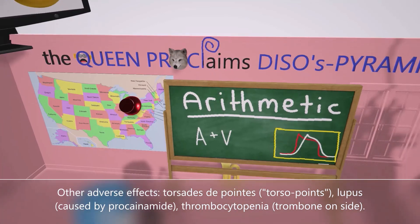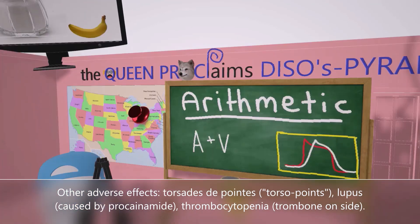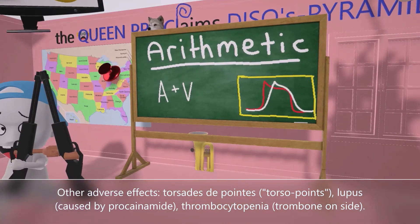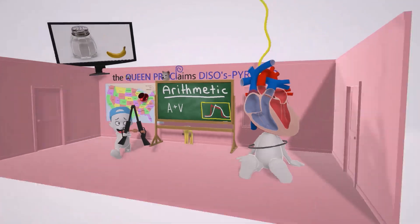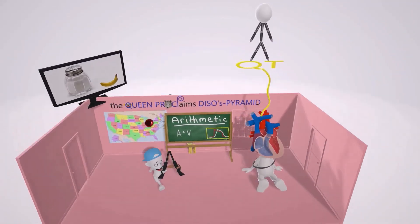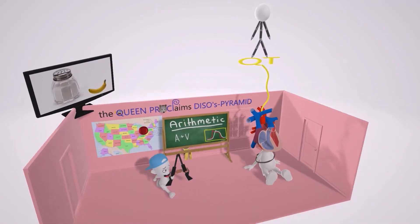Finally, we notice this trombone on its side, which reminds us of thrombocytopenia, as all these drugs can lead to thrombocytopenia. That wraps up this scene on the class 1 antiarrhythmic drugs.